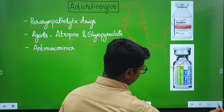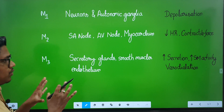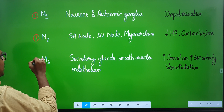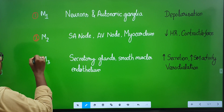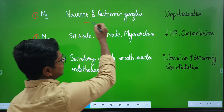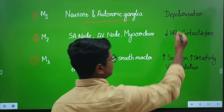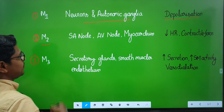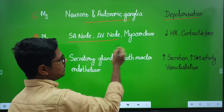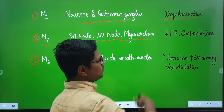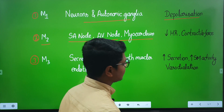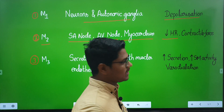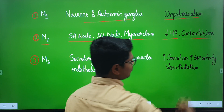Next, we will go for the mechanism of action. First, you should know some basics. Muscarinic receptors are of three types: M1, M2, and M3. M1 receptors are present in neurons and autonomic ganglia — when activated, they cause depolarization or excitation. M2 receptors are present in the heart, specifically in the SA node and AV node, which controls heart rate, and in the myocardium, which controls contractile force. When M2 receptors are activated, they cause reduction in heart rate — bradycardia — and also reduce the force of contraction.